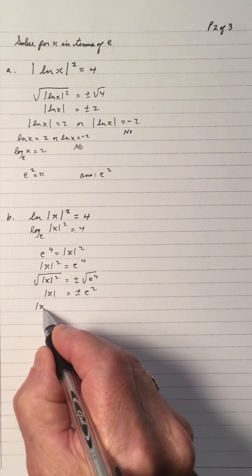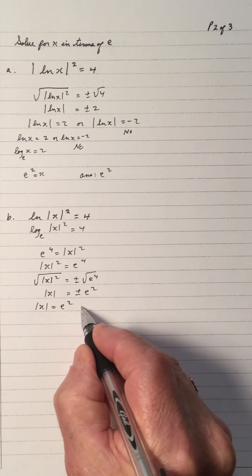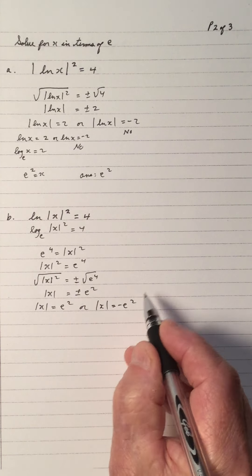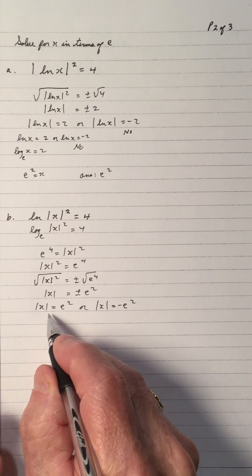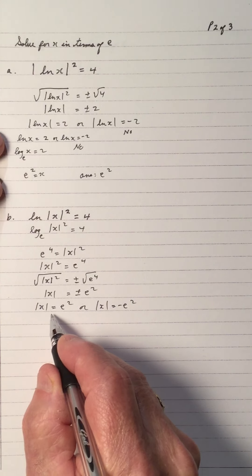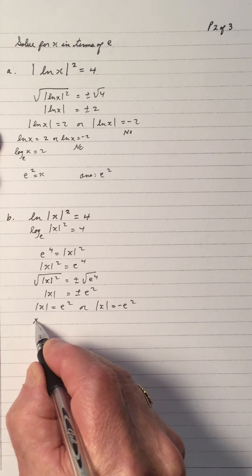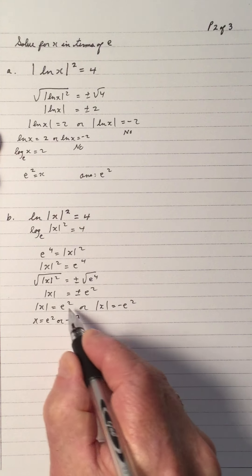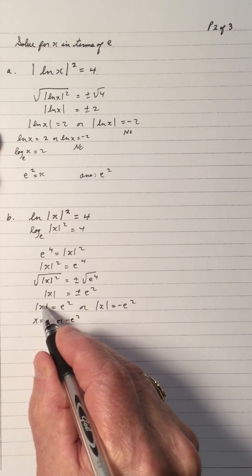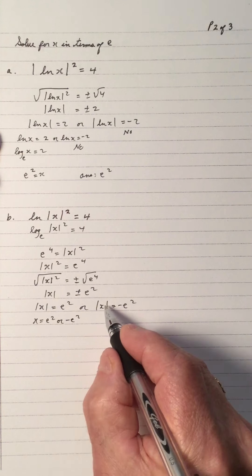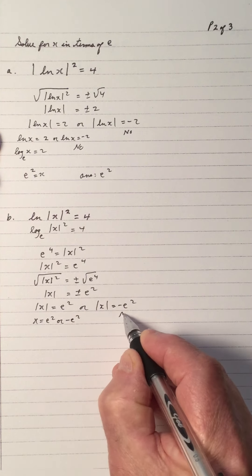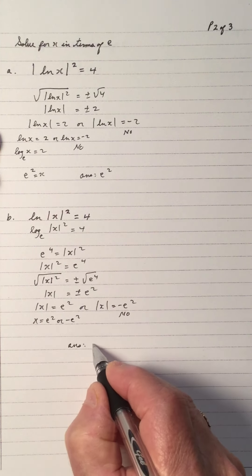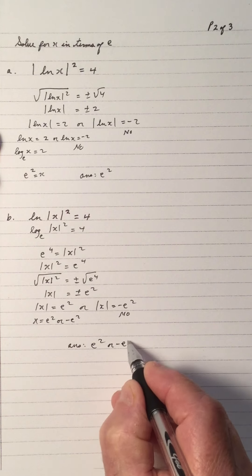So that means |x| equals e², or |x| equals negative e². If |x| equals e², then x equals e² or negative e², because the number inside the absolute value can be plus or minus. And |x| equals negative e² is impossible since absolute value is always positive — so no. The answer is e² or negative e².